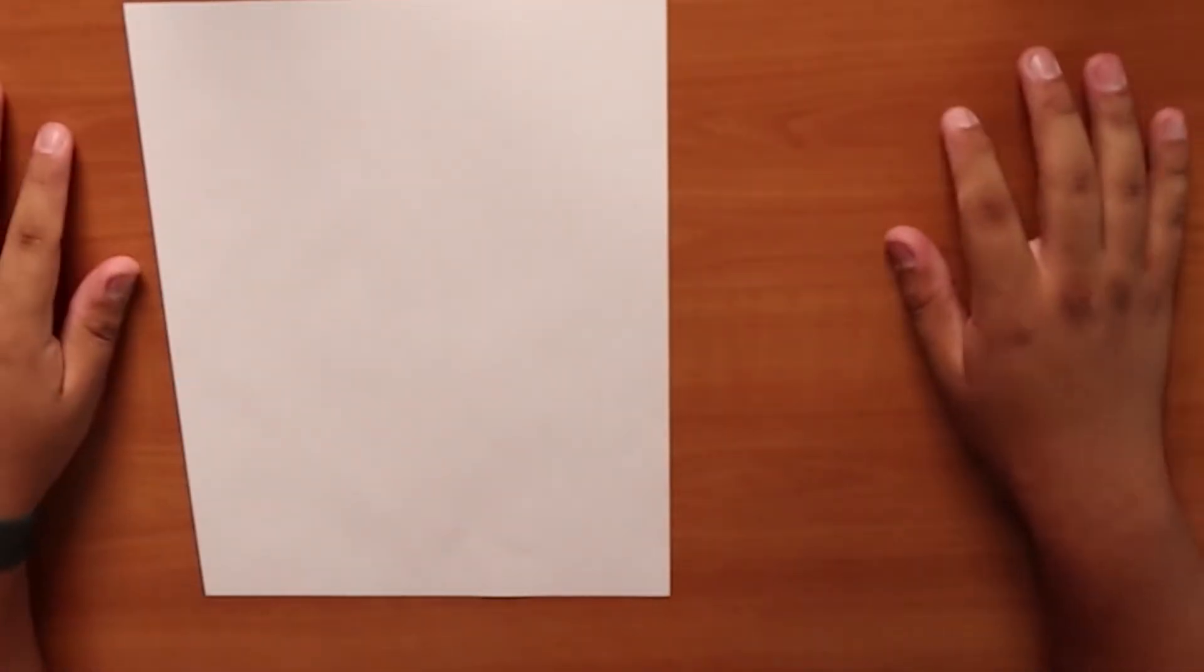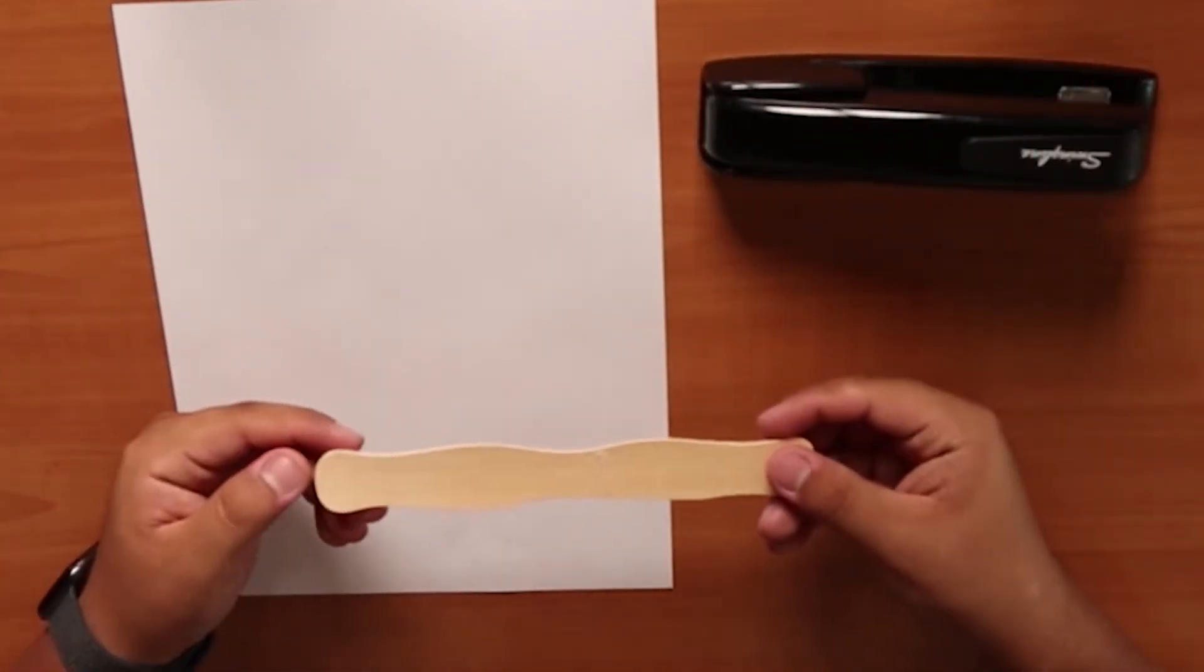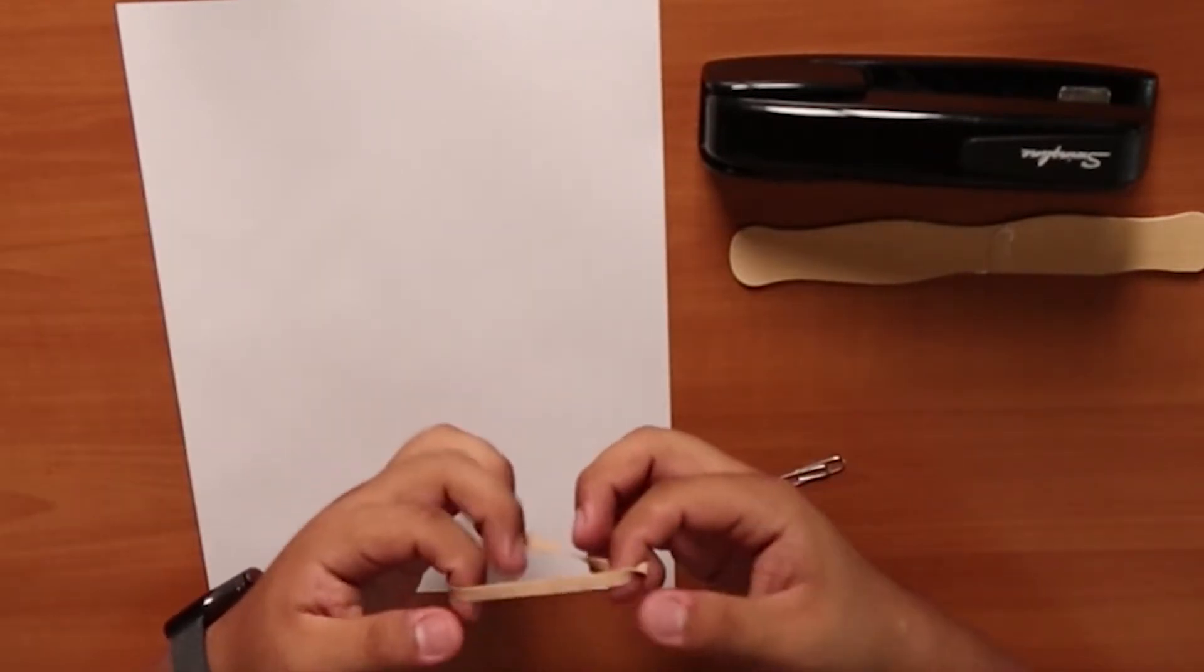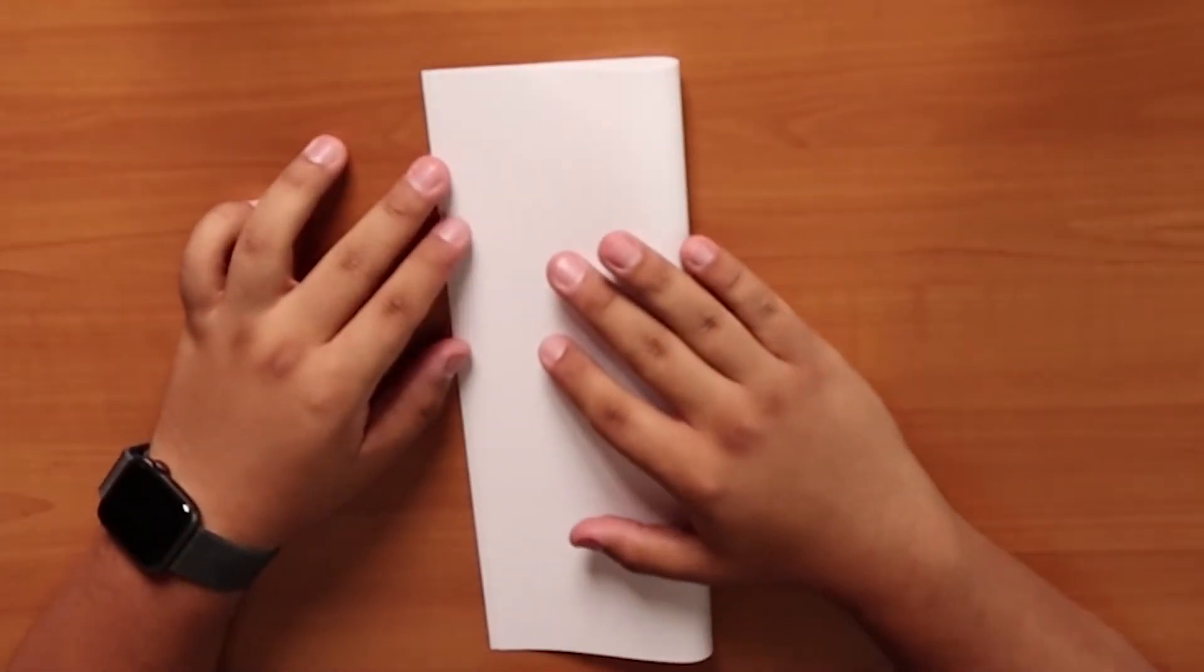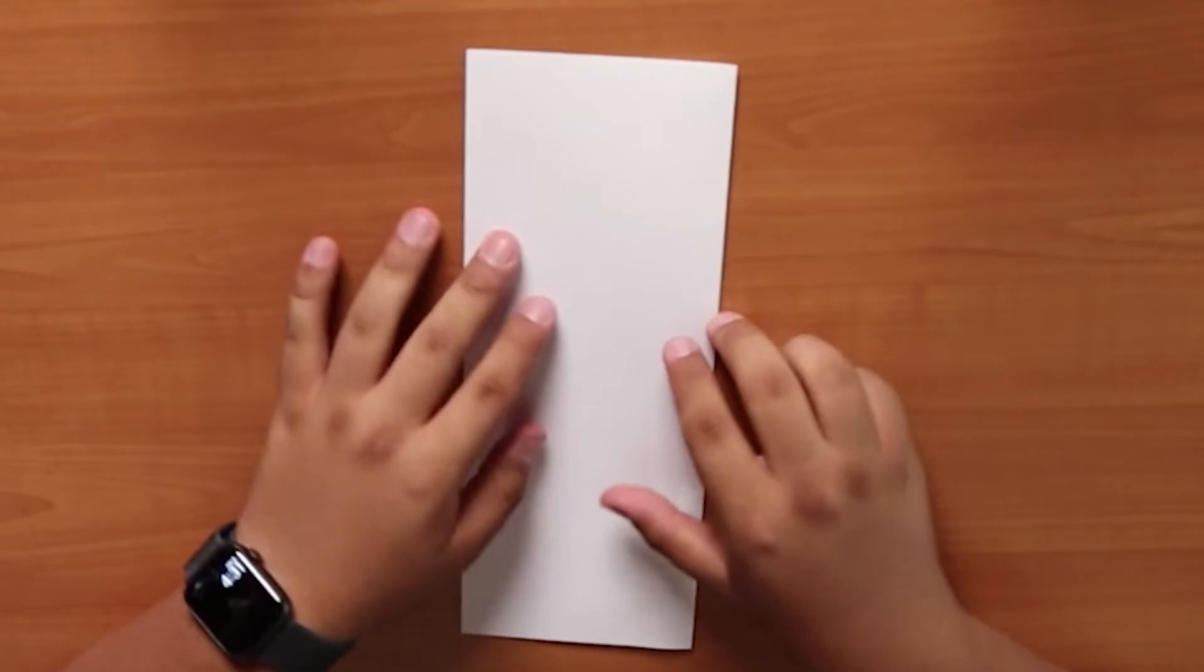The materials you will be needing for this activity are a sheet of paper, stapler, pencil or popsicle stick, small paper clip, and a rubber band. Then, grab the sheet of paper, fold it vertically, then open it back up. We should be left with a crease running vertically down the sheet of paper.